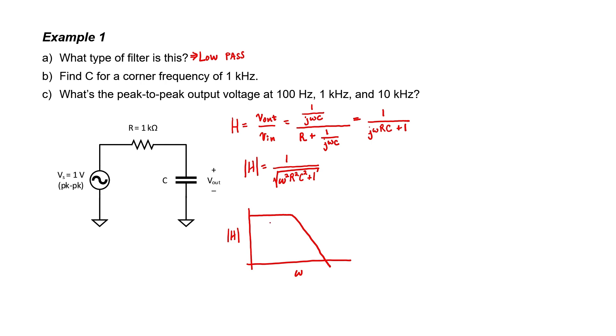That is, low frequencies pass through, and high frequencies are blocked. The corner frequency is the dividing line between these two regions of operation.